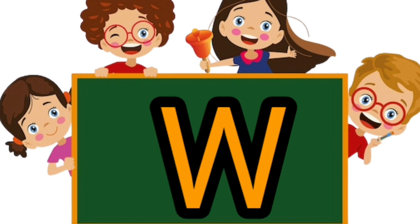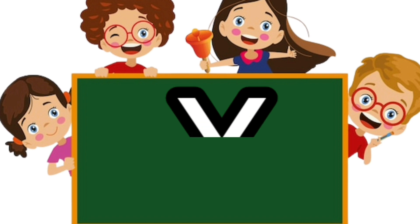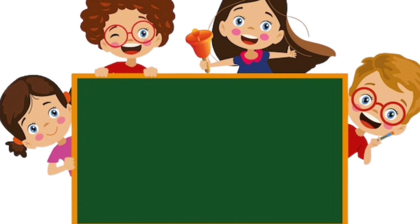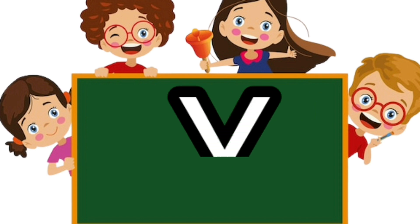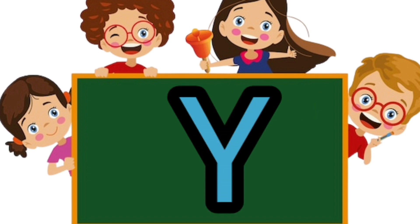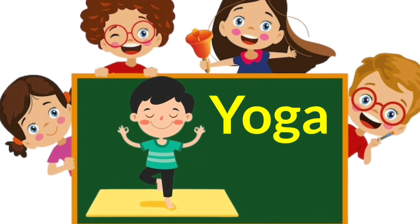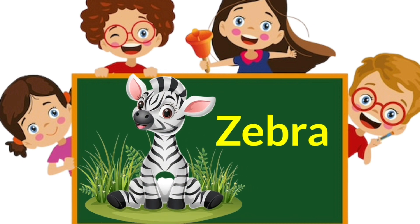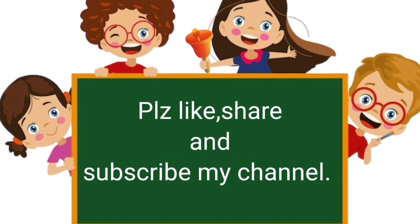W. W is for Watermelon. X. X is for X-ray. Y. Y is for Yoga. Z. Z is for Zebra.